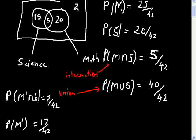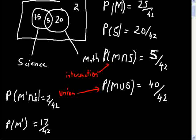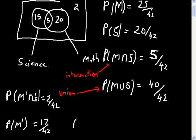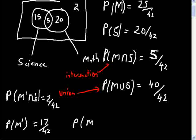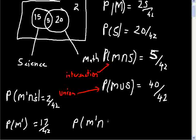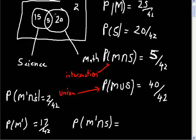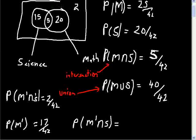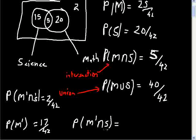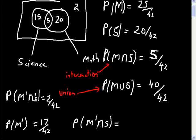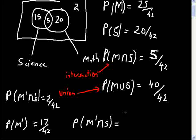To denote the 15 students who only do science, you write: probability of not M intersection S — those who don't do maths and those who do science. Those who don't do maths includes the 15 and the 2; intersection finds the region common to both. Those who do science is 15, so the common area is 15, giving 15/42.